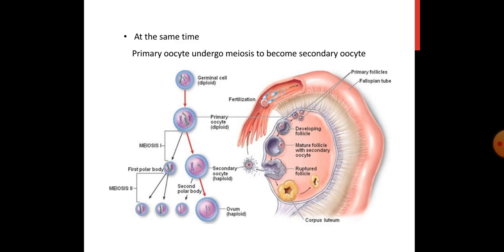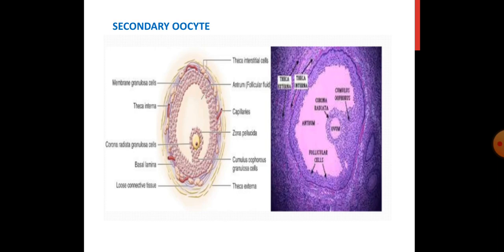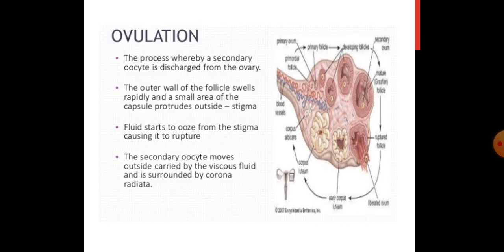Primary oocyte undergoes meiosis to become secondary oocyte, which will then travel to the uterus for implantation. The structure of the secondary oocyte can be seen with the ovum in the center, the primary oocyte surrounded by cells, the antrum filled with fluid, and theca internal and theca external layers. Ovulation is the process whereby a secondary oocyte is discharged from the ovary — that which ruptures and comes out of the ovary is the secondary oocyte.